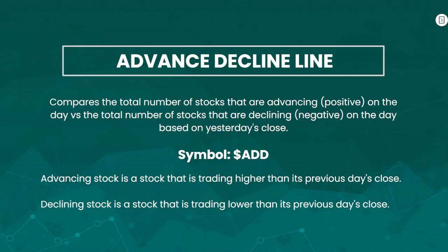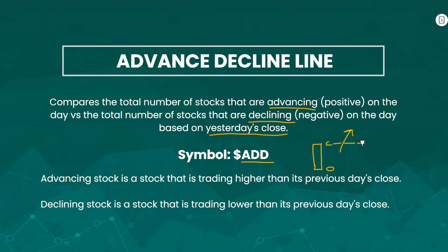Next we have the advance/decline line, ticker symbol ADD. This compares the total number of stocks that are advancing on the day by the total number of stocks that are declining on the day, and this is based on yesterday's close. An advancing stock is a stock that is trading higher than its previous day's close, whereas a declining stock is trading below the previous day's close. ADD is simply the net sum of advancing stocks less declining stocks.